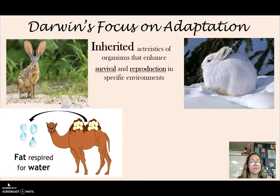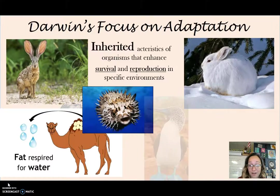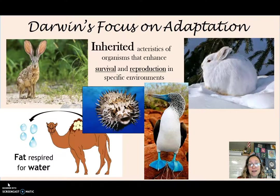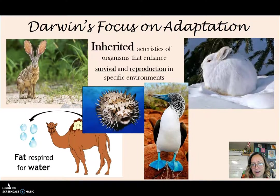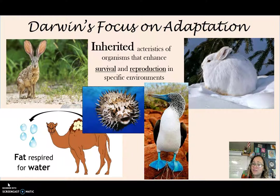Think about a camel who lives in very dry environments — it has lots of fat stores so it can break them down during cell respiration and make water, an adaptation to that dry environment. A pufferfish puffs up with its spines — those spines are adaptations that increase its chance of survival. For reproduction, the blue-footed boobies of the Galapagos have bright blue feet that tell their potential mate, 'Hey, look how healthy I am.' Those blue feet don't help their survival, but they help them in reproduction. So adaptations are traits an organism is born with that increase their chance of surviving and reproducing in a particular environment.